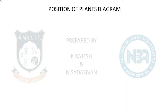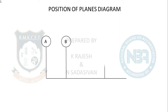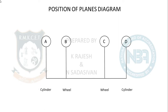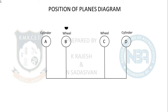Now draw the position of planes diagram: A, B, C, D. A is the cylinder/wheel for the outside cylinder locomotive — keep this clearly in mind. For an outside cylinder locomotive, only the engine cylinder is visible from outside; the wheels are not visible from outside.